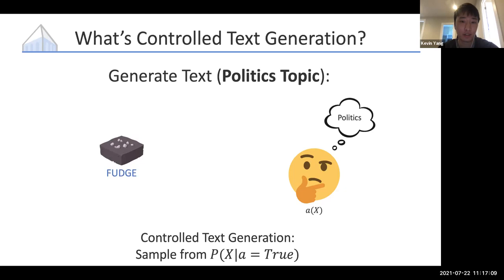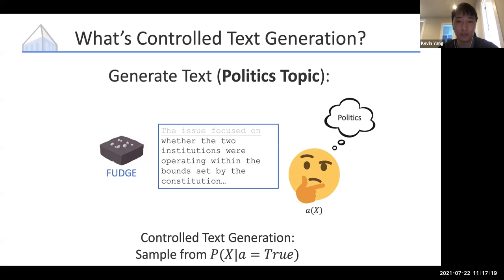So let's look at what happens if we use our method FUDGE. With the same prompt and a politics topic constraint, here's what FUDGE says. In this example it works pretty well — it's talking about institutions and constitutions, and seems kind of on topic.